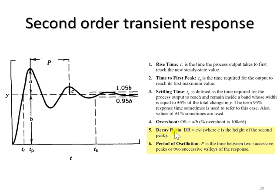The fifth parameter is the decay ratio, which is equivalent to c over a. If we look at this response, we have the first peak and then the second peak. For an underdamped system, the second peak is lower than the first peak, so we have a smaller value of c compared to a.